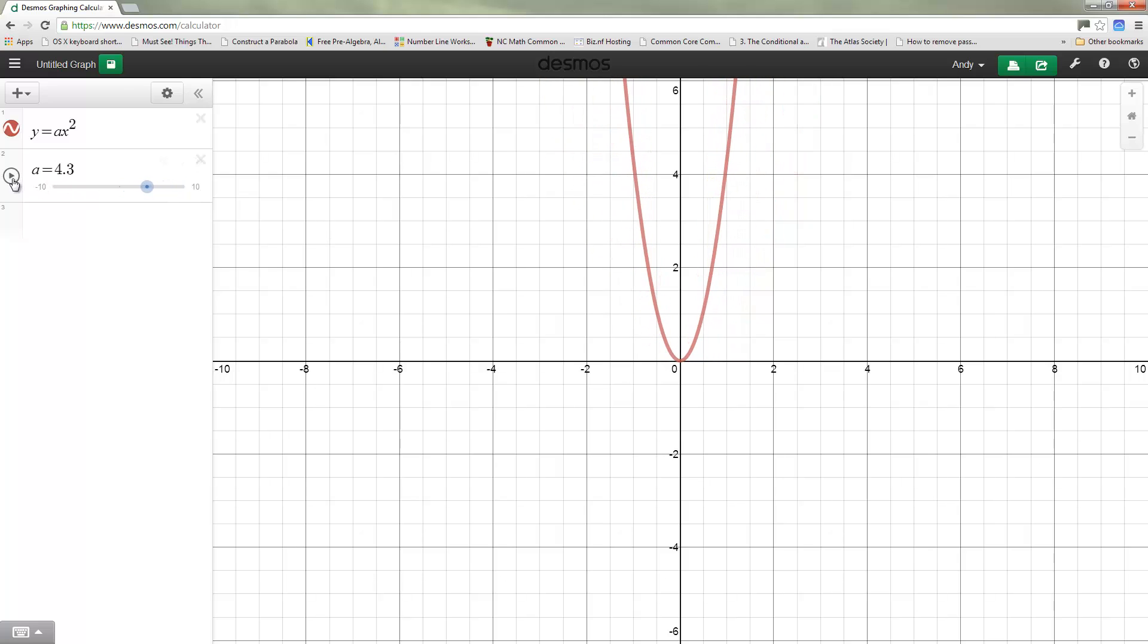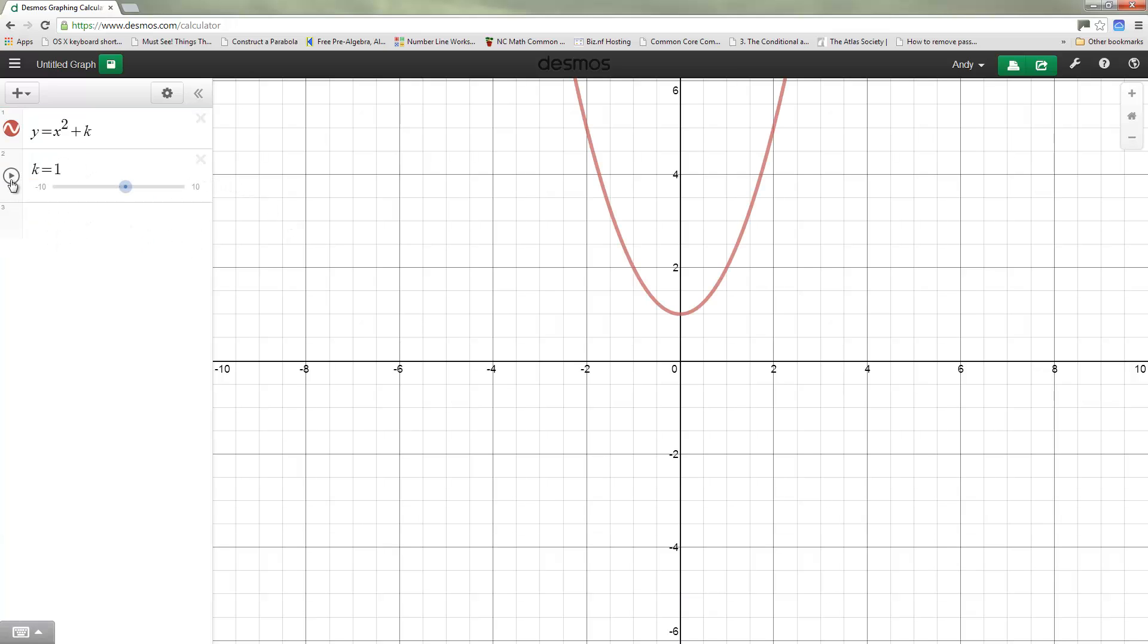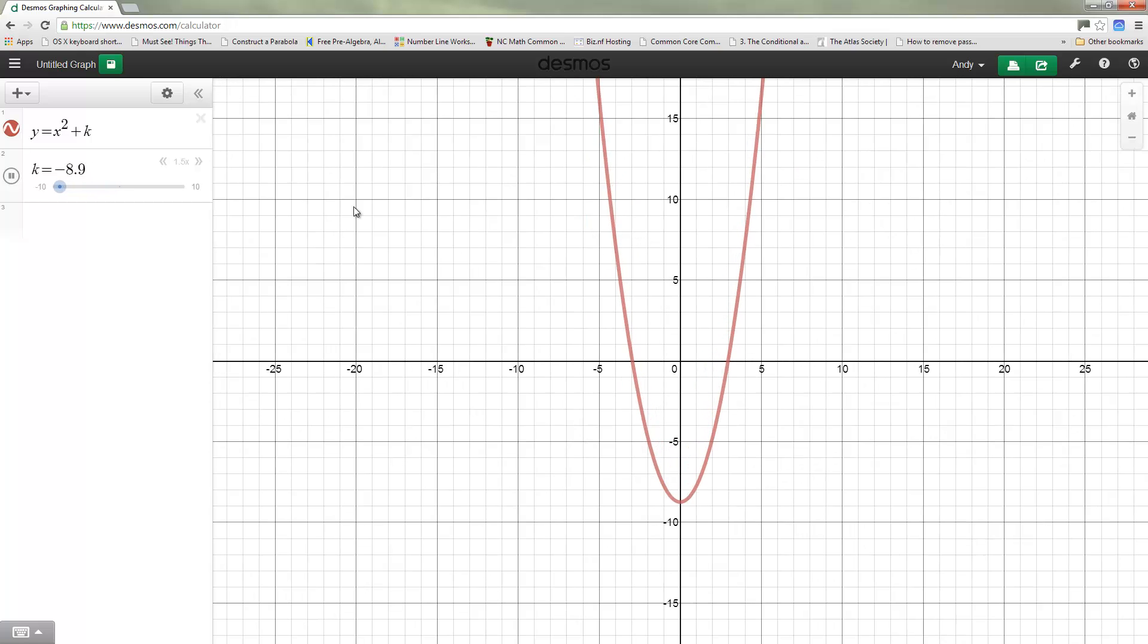The next thing we checked was what if we put a number at the end and traditionally that number at the end has been called K. Put a slider for K and what's actually happening here, it's not that the parabola is disappearing, it's moving up. So let me zoom out a little bit and you see it's just bouncing up and down between positive 10 and negative 10.